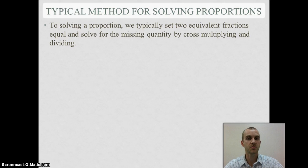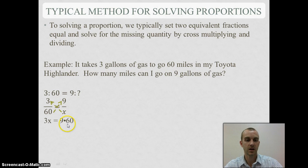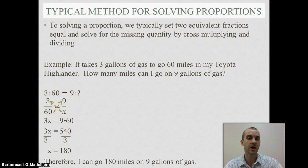If you think about the typical way we solve proportions by cross-multiplication and dividing: if I had a problem where I've got 3 gallons of gas to go 60 miles in my Highlander, how many miles can I go on 9 gallons? I can set up my ratio using colons, but more commonly we use fractions and a variable. Then I cross-multiply and get 3x equals 90 times 60, which is 540, and then divide both sides by 3 to see that my solution would be 180 miles.